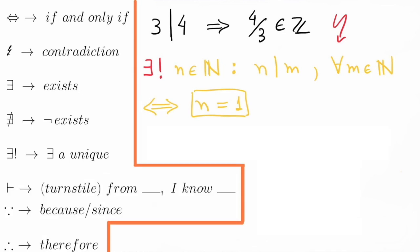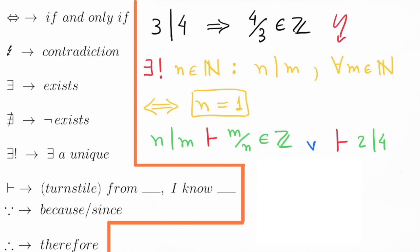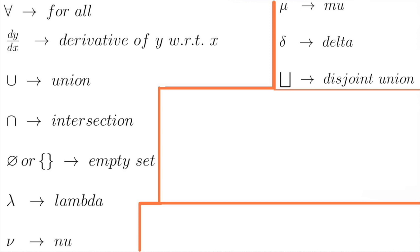The next symbol is the turnstile, which when written between two mathematical expressions denotes from something, I know something else. The following two symbols mean because or since and therefore. Let us see an example of the use of turnstile. From N divides M, I know that M divided by N is an integer. Another example is simply that I know that 2 divides 4. The last group of symbols is the following.